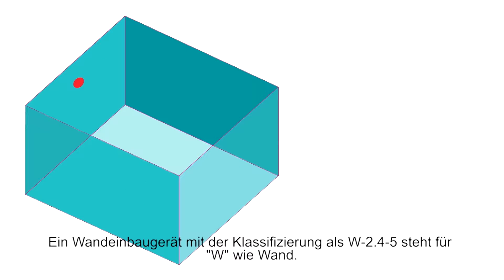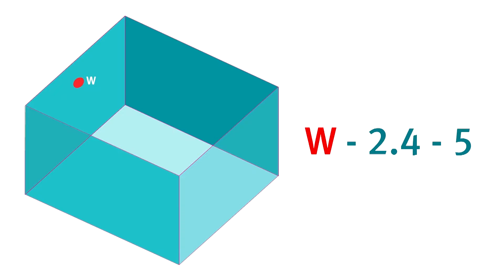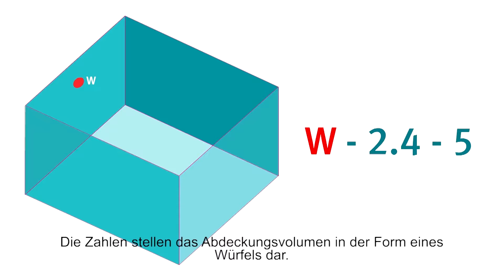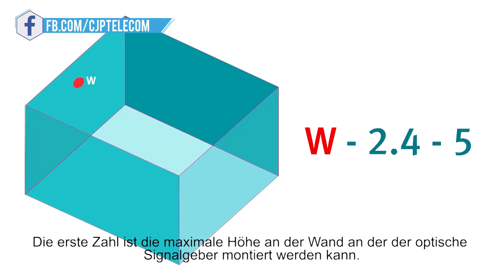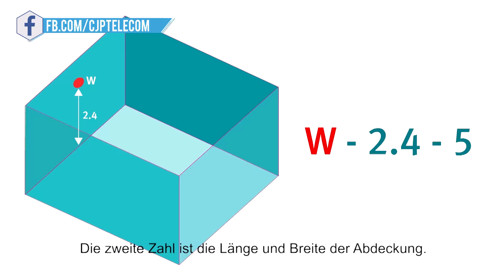A wall mounted VAD might be rated W2.4 5, where W stands for wall. The numbers again represent the coverage volume, this time in the shape of a cube, where the first number is the maximum height on the wall that the VAD can be mounted and the second number is the length and width of the coverage.